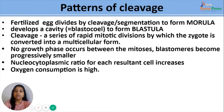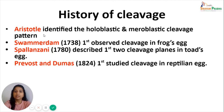In between these mitoses there occurs no growth phase. The blastomeres become progressively smaller with divisions. The nucleocytoplasmic ratio for each resultant cell increases and the oxygen consumption during these mitotic cycles remains quite high. It was Aristotle who first identified holoplastic and meroplastic cleavage patterns, followed by Swammerdam who first observed cleavage in frog's egg. Spallanzani in 1780 described the first two cleavage planes in toad's egg, and Prevost and Dumas in 1828 first studied cleavage in reptilian egg.